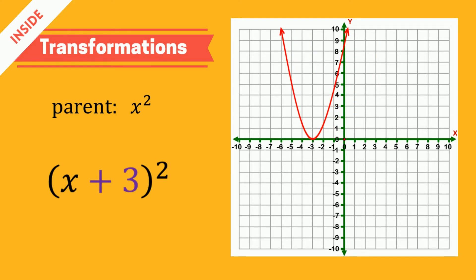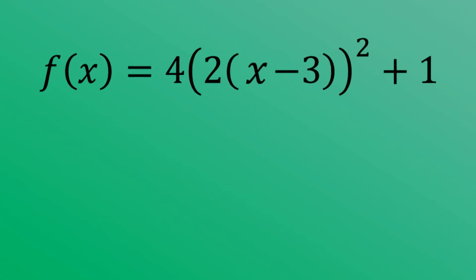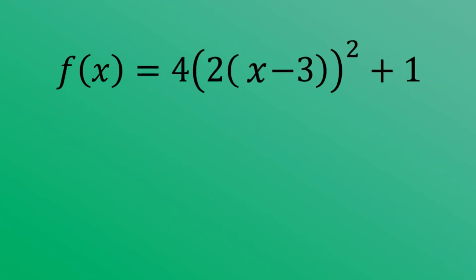So why does this happen? Well, the truth is that these inside transformations are not really backwards at all. To convince you that these transformations are working normally, let's play around with a function and watch what happens when we put in a value for x. Say, x equals 2.